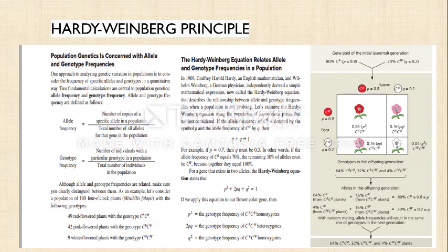We will go into some deeper knowledge, which is the Hardy-Weinberg Principle. In 1908, a scientist named Godfrey Harold Hardy, together with William Weinberg, a German physician, independently derived a mathematical expression now called the Hardy-Weinberg equation.